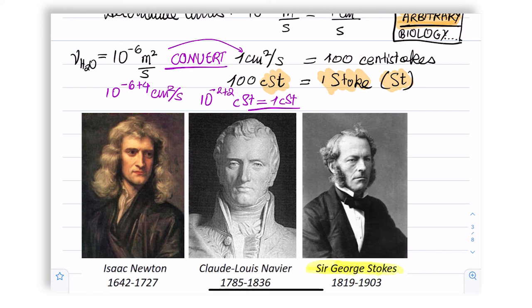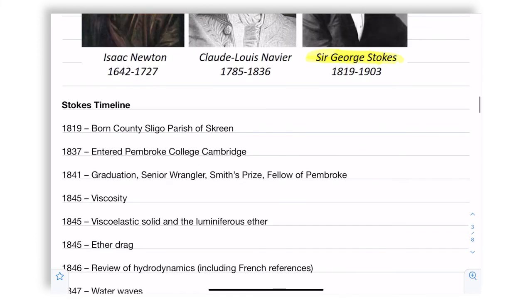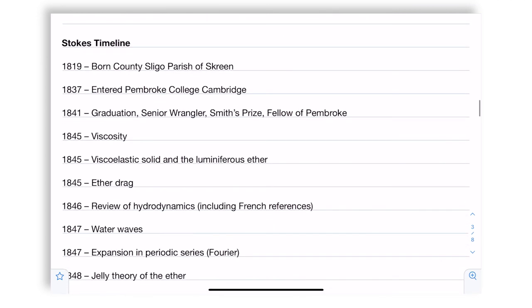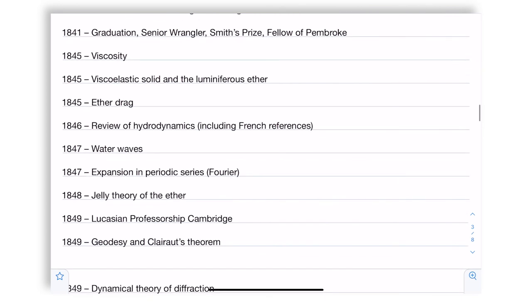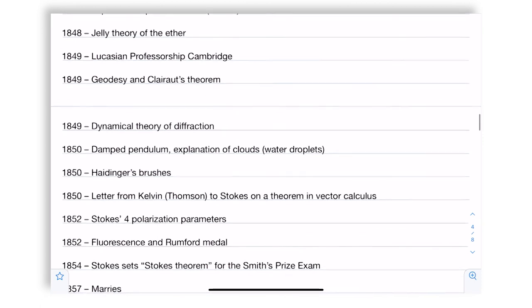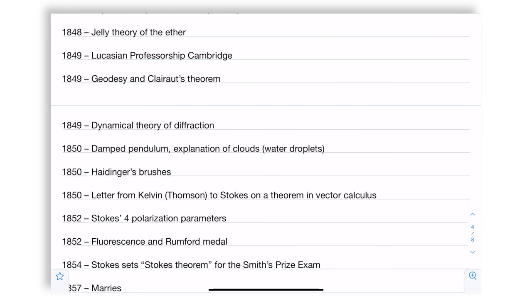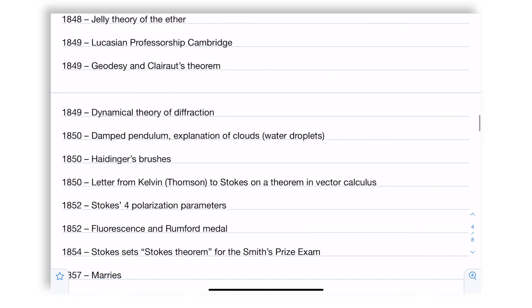And the stoke is in honor of this last person, George Stokes. Indeed, the timeline of Stokes was that he was born in 1819, entered Cambridge University and started working in 1845 on viscosity, viscoelastic solids, drag, hydrodynamics, water waves, jelly theory and geodesy, and Clairaut's theorem. He also worked on diffraction, damped pendulum, clouds, water droplets. In a way, he was a polymath; he did many different things.